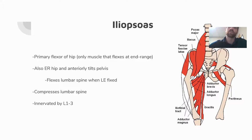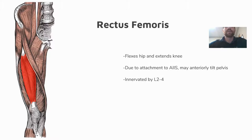The rectus femoris flexes the hip and extends the knee. Because of its attachment to the AIIS, it may anteriorly tilt the pelvis, which plays a role in some SI assessments and treatments — muscle energy techniques, for example. It is innervated by L2 through L4.